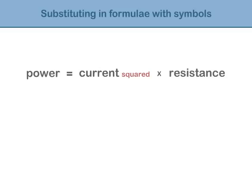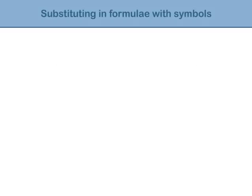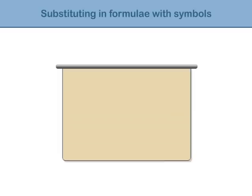This is much simpler shown in maths than in English. If i is 10 amps and r is 5 ohms, how much power is generated?